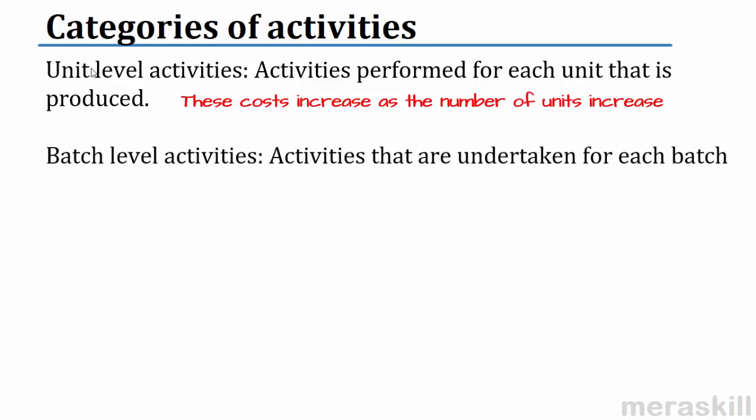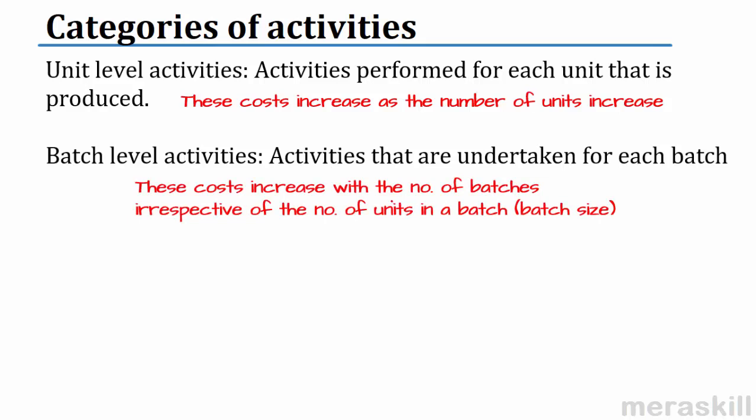Similarly, there are batch level activities which are undertaken for each batch. Suppose I always dispatch 50 units — there is a consignment of 50 units that I always send. The costs for sending this consignment — preparing the invoice, arranging for the transport, the transport cost — all these costs together are for that consignment of 50 units. These costs change with every consignment, for every batch. Remember the setup cost from the previous example, where depending on the number of setups, the costs change. The activities undertaken for each batch, like a setup activity, increase with the number of batches, irrespective of the number of units in the batch.